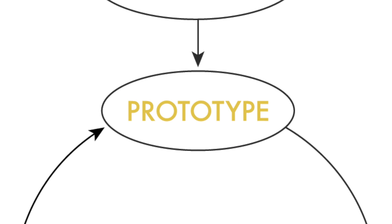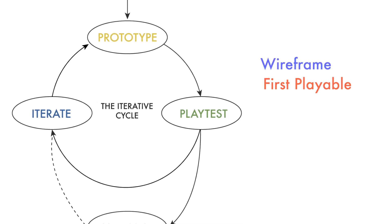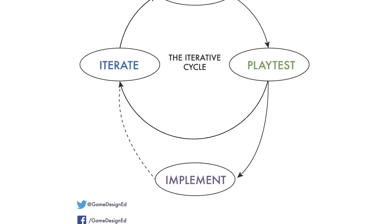And eventually you'll begin to focus on one prototype and you'll keep iterating on it and make a wireframe and a first playable demo and an alpha build and a beta build. After enough cycles through the prototype, playtest, and iteration stages, you'll get to the stage of implementation.